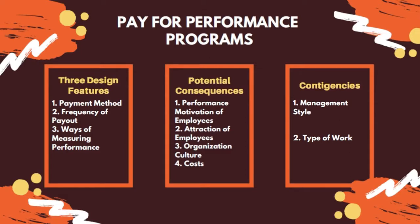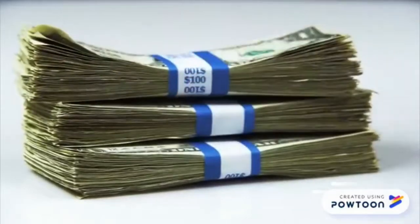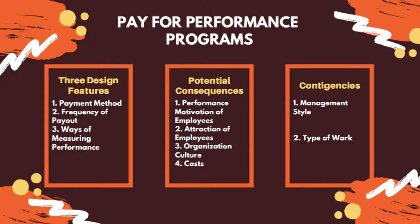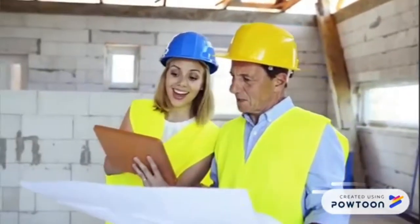Pay for Performance Programs — Three Design Features: First, payment method; second, frequency of payout; third, ways of measuring performance. Potential consequences of such programs include performance motivations of employees, attractions of employees, organization's culture, and cost. Finally, there are two contingencies that may influence whether each pay program fits the situation: first, management style; and second, type of work.